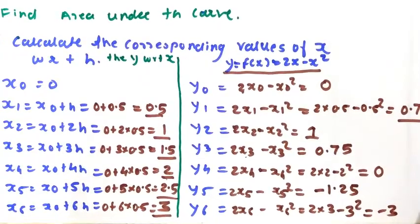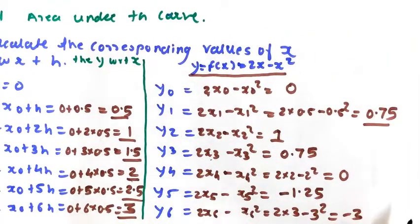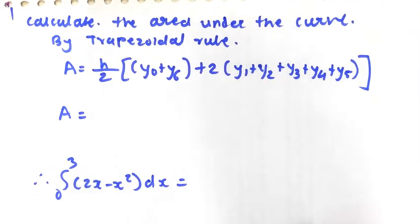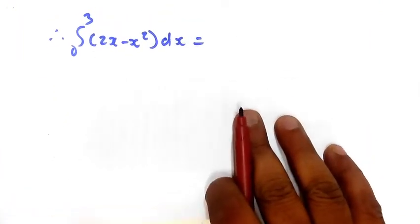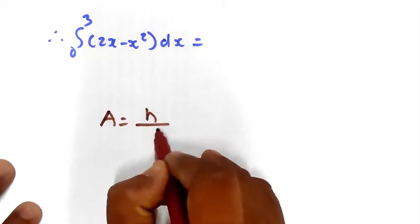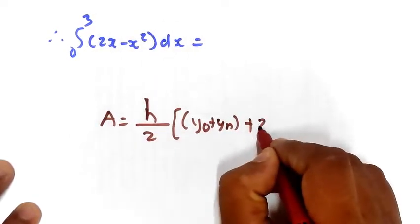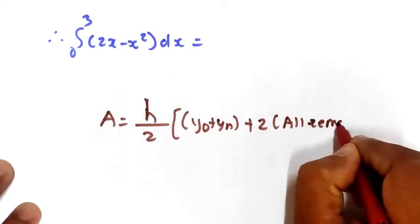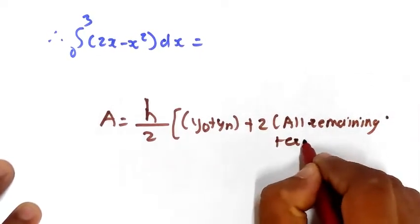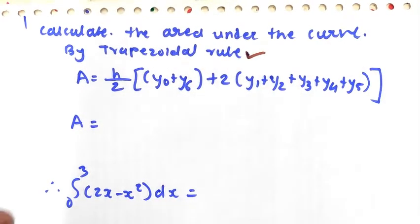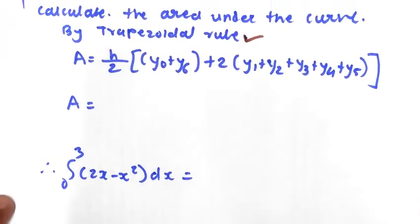We have now found all values of x and y. The next step is to calculate the area under the curve using the trapezoidal rule. The trapezoidal rule formula is: Area = (h/2) × [y0 + yn + 2×(all remaining terms of y)].